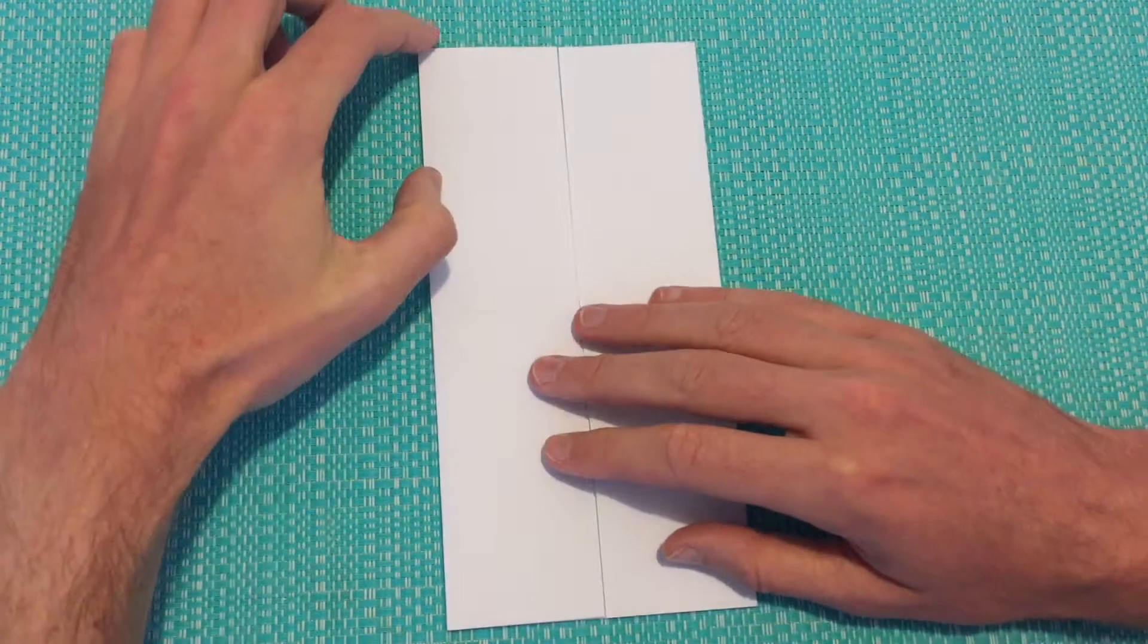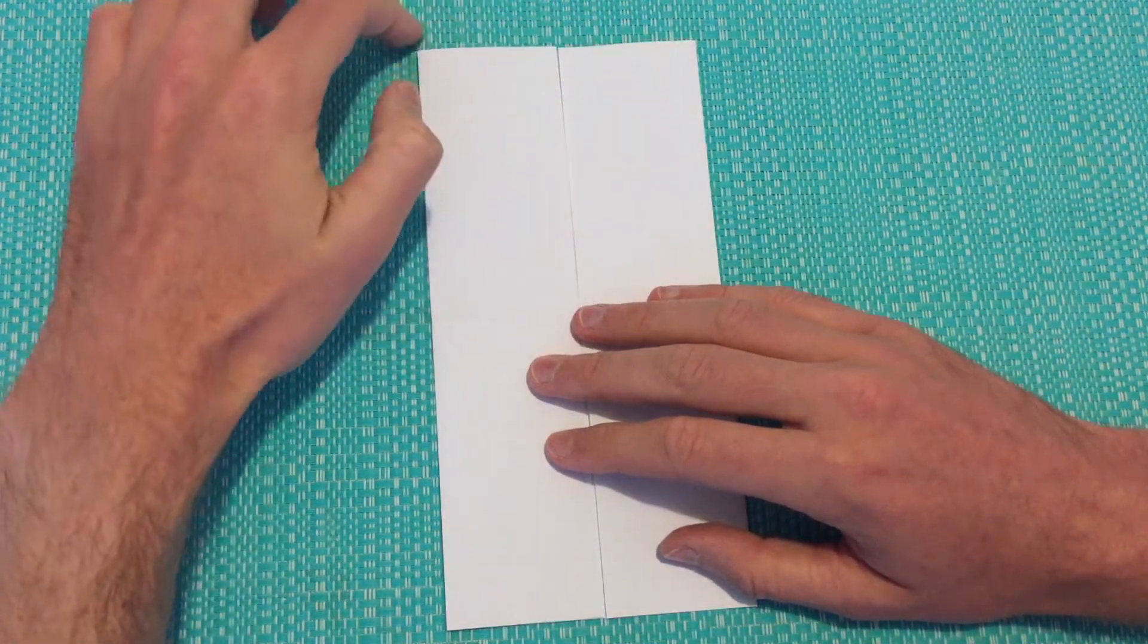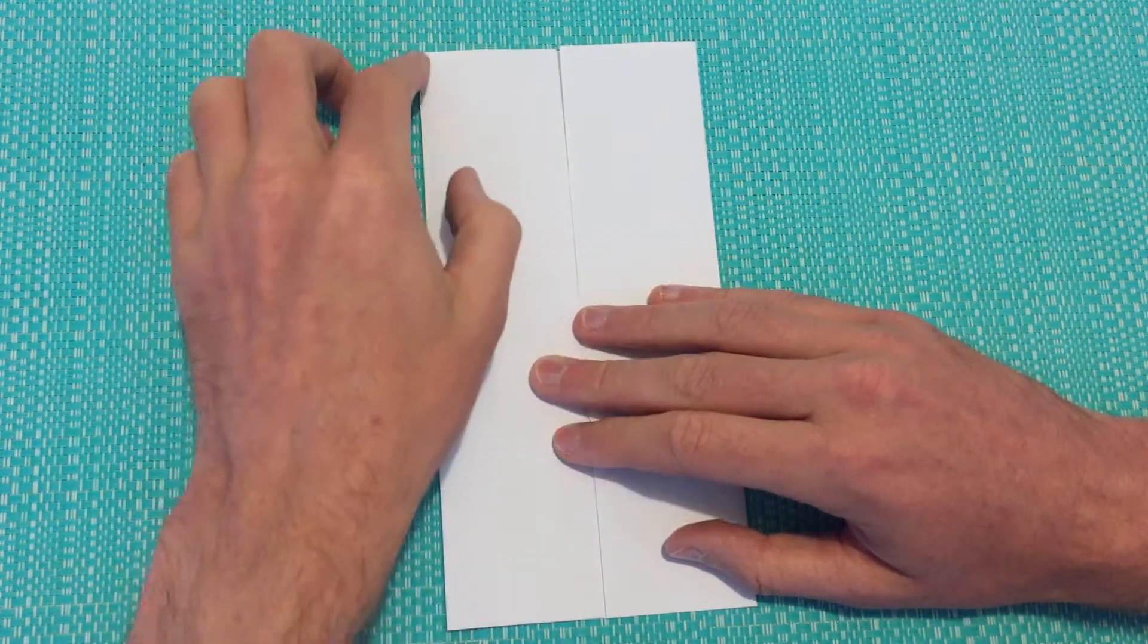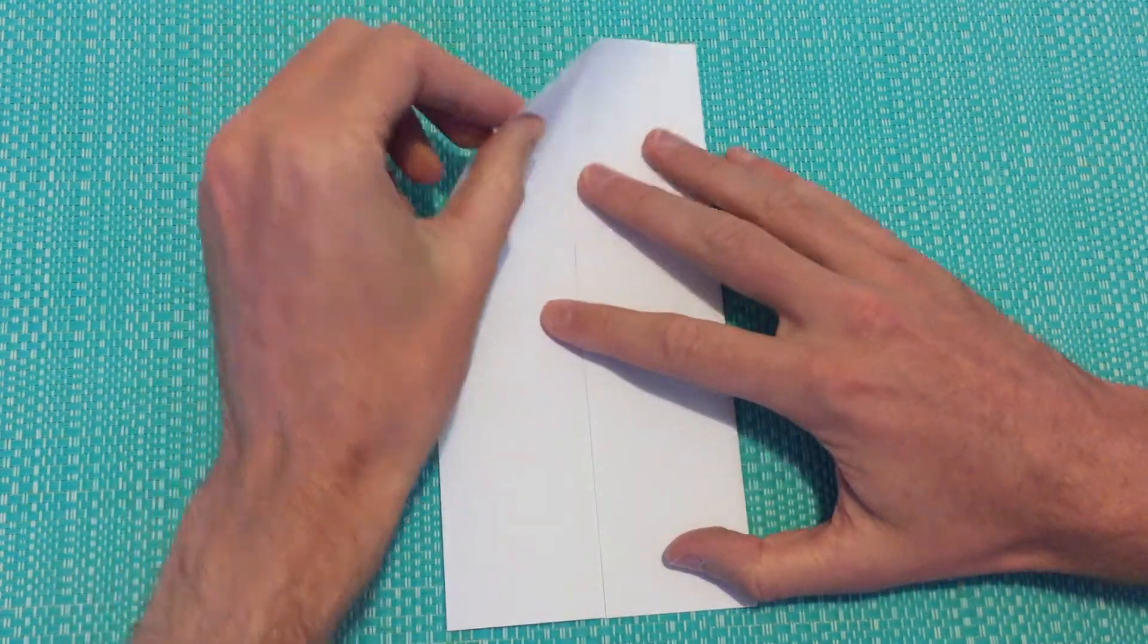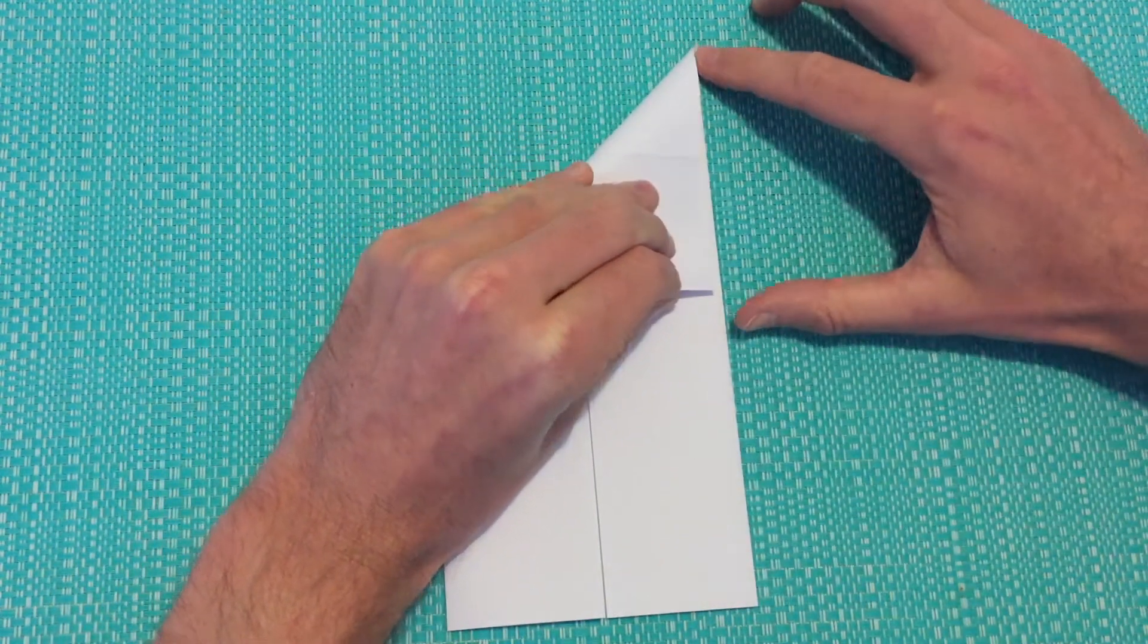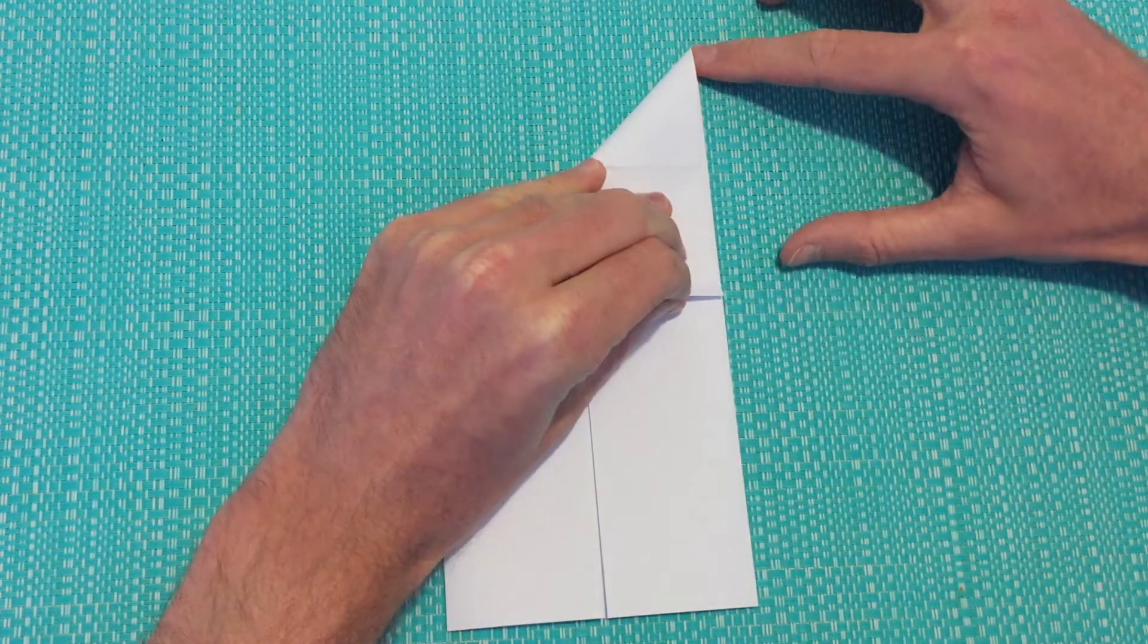We're now going to bring across our top line, the top edge, so that it lines up with the right-hand edge. So we'll take our left-hand corner, get those edges to touch exactly.